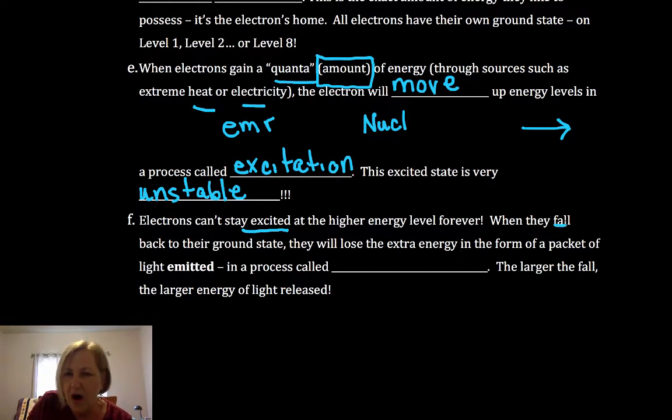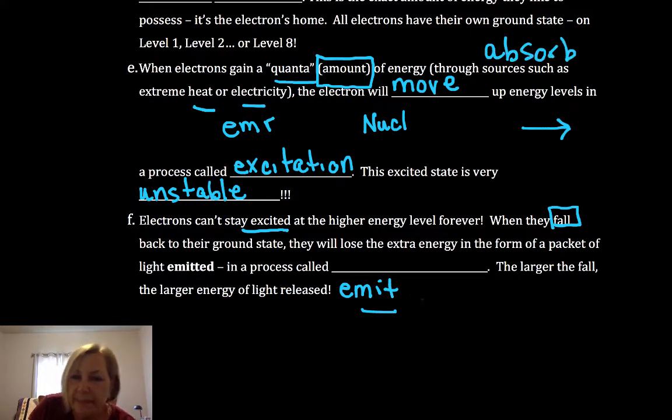Electrons won't stay in their excited state forever. They will fall back to their ground state. And they will emit electromagnetic radiation. Instead of absorbing energy up here, they're going to emit, and this time it's always going to be electromagnetic radiation. And we call this process relaxation.